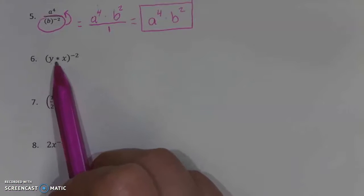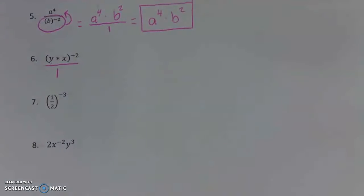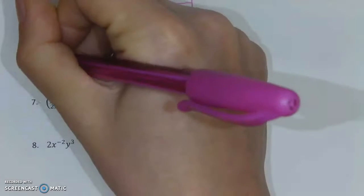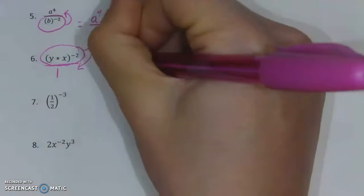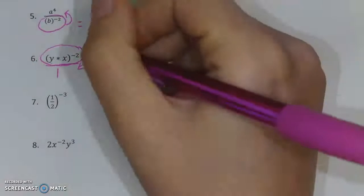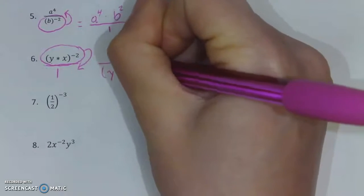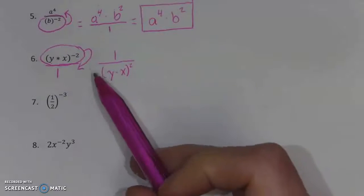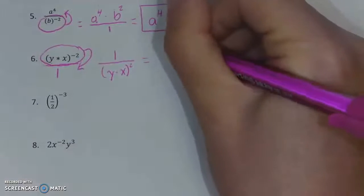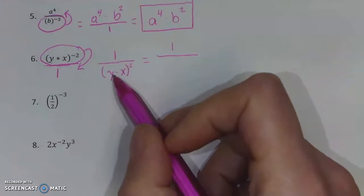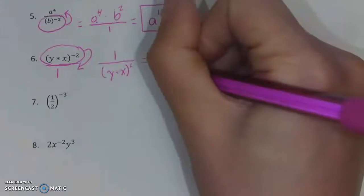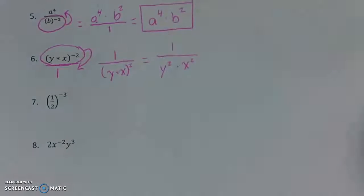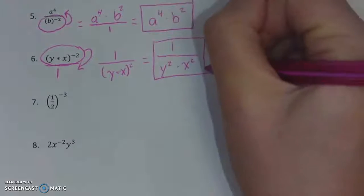When we have something like the quantity Y times X, all raised to the negative second, that negative is telling you to adjust the fraction. Notice that the negative two applies to everything inside the parentheses — that means the whole thing is moving, not just the X or just the Y. We're left with nothing on top, so put a one there. On the bottom, we have the quantity Y times X, all squared. We don't like to leave those parentheses, so we can distribute the exponent over multiplication: that gives us Y squared times X squared. So the final answer is one over Y squared times X squared.